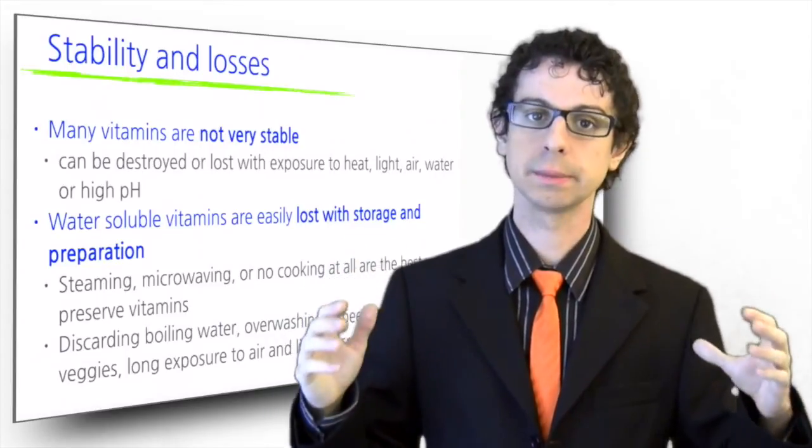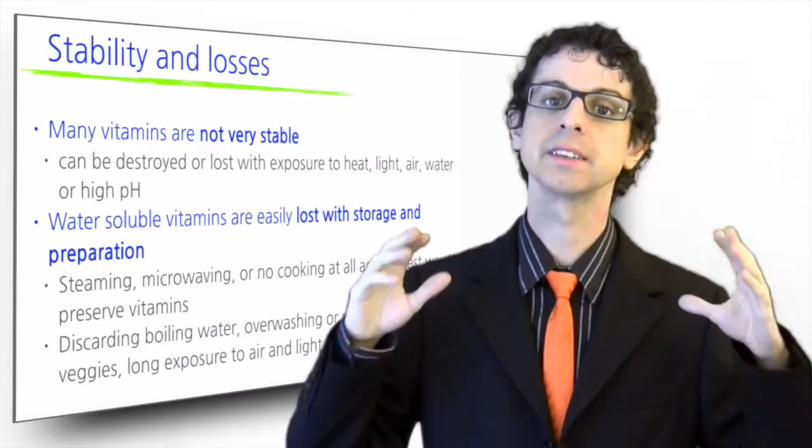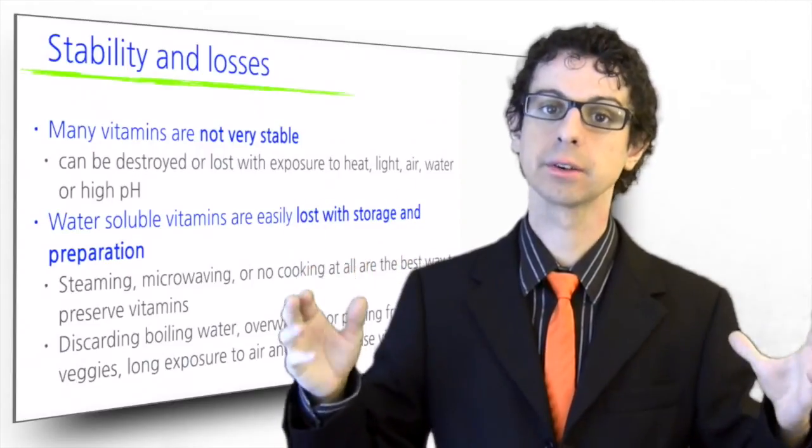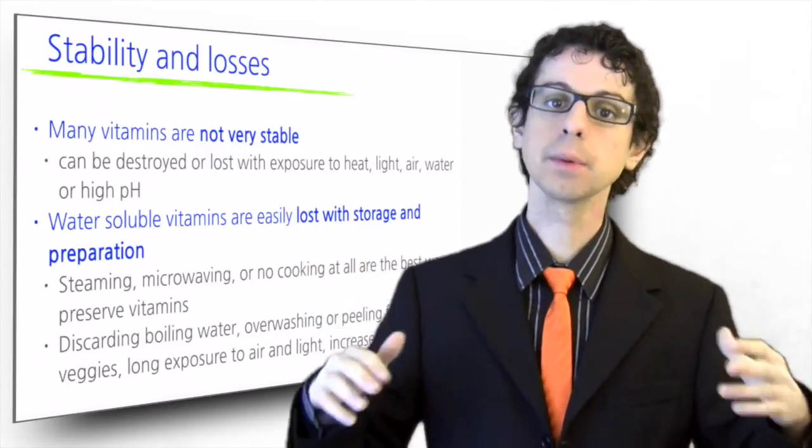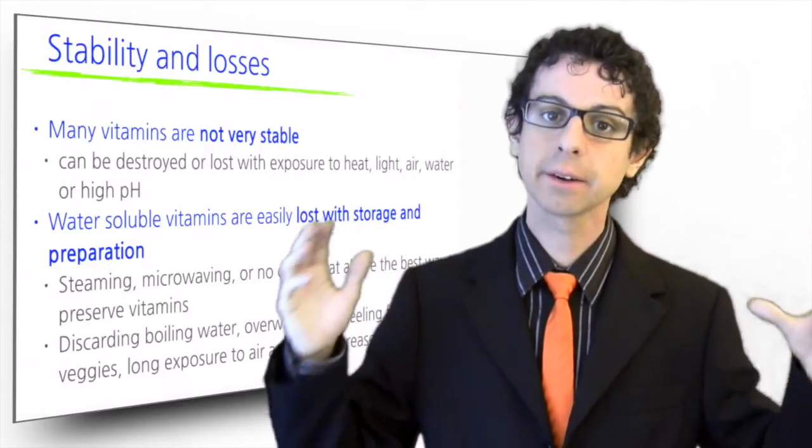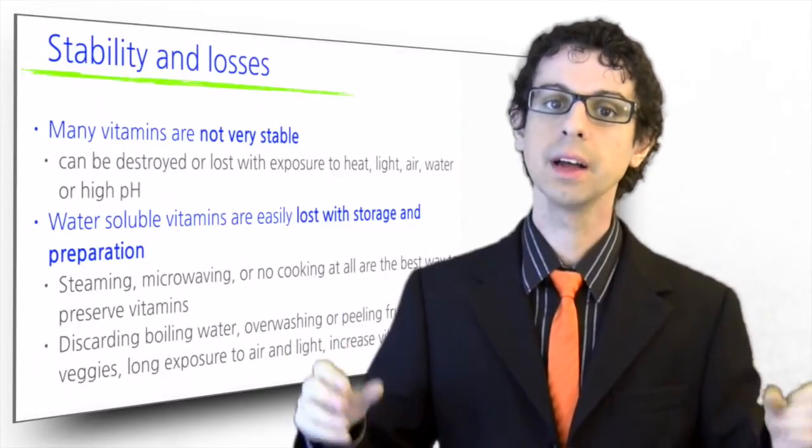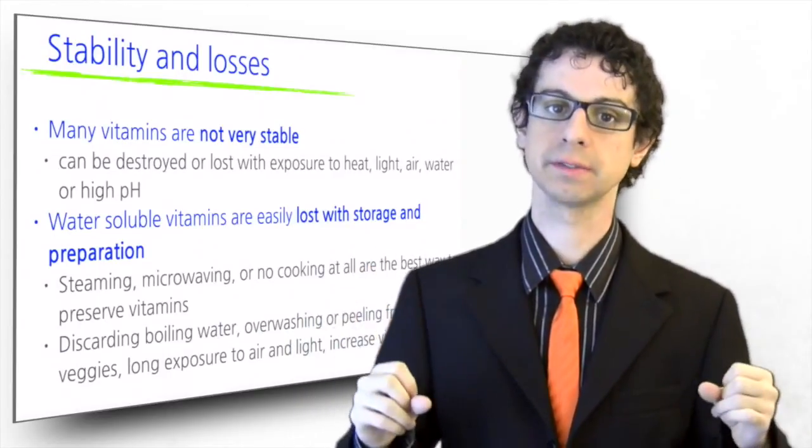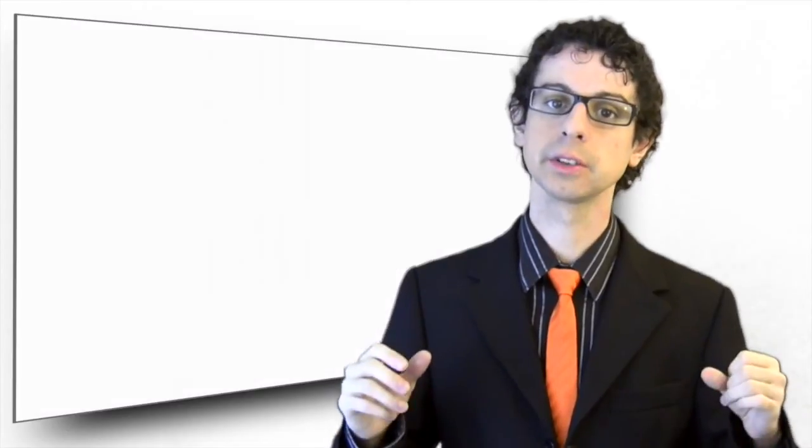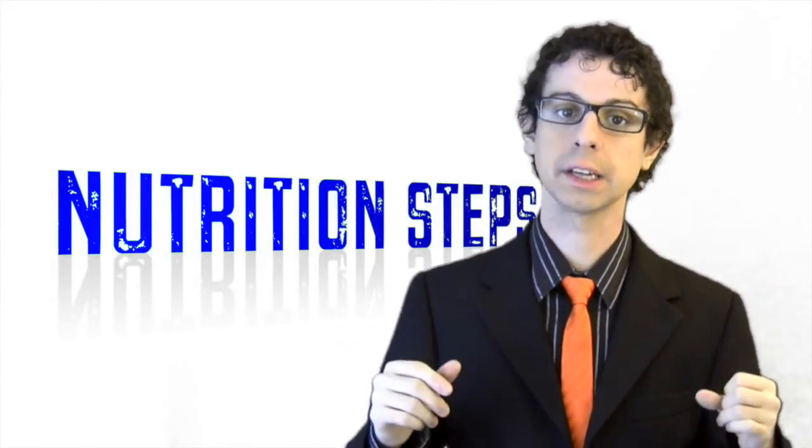Remember that most vitamins, as well as minerals and other bioactives, are usually found in the skin or the outer layer of fruits and vegetables. For example, the potato skin is extremely rich in vitamins and minerals. The carrot outer layer is the richest in beta-carotene, and so on. Try not to peel fruits and vegetables. If you are concerned about pesticides and other agrochemical residues, choose organic products.